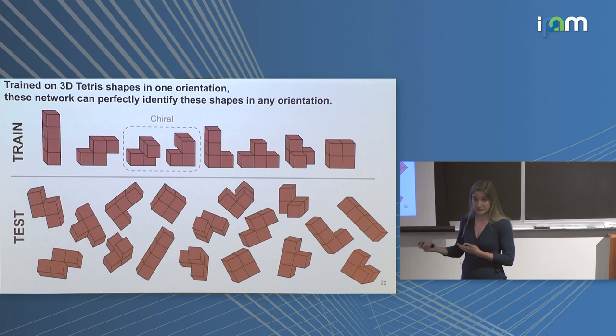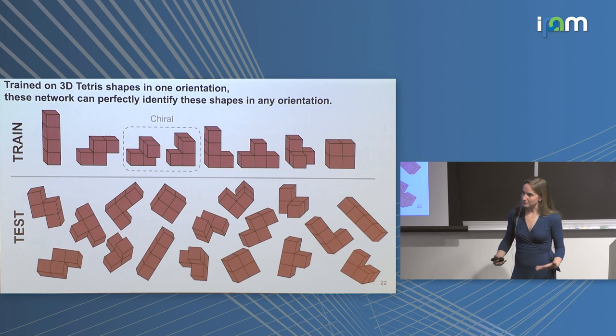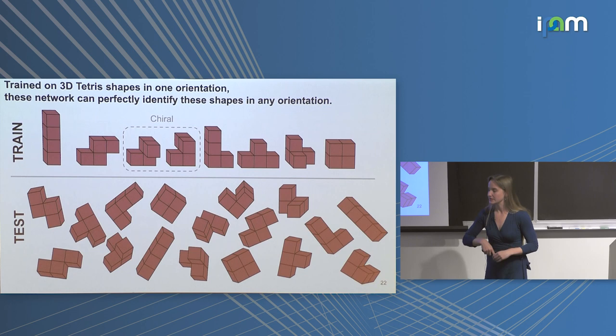You have two sets of inputs to the network: the geometry — where things are in 3D space — and features on that geometry. It's similar to an image, except an image assumes points lie on a grid. In our case, points may not be on a grid, so you have to actually specify the geometry.